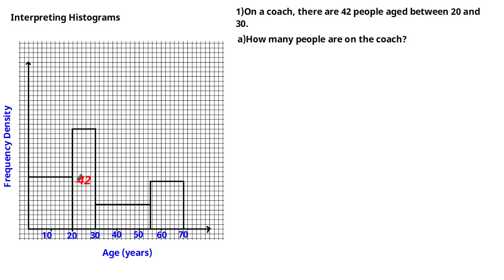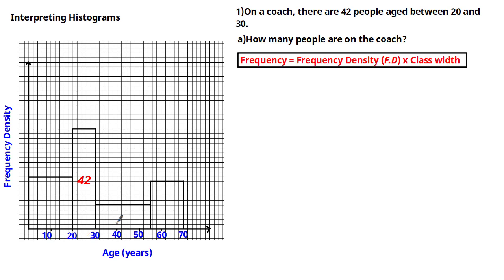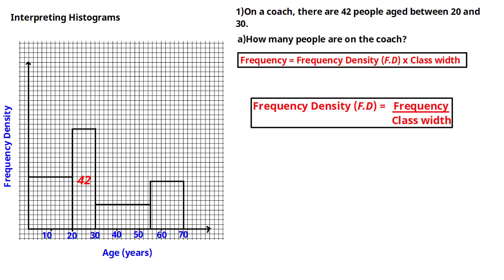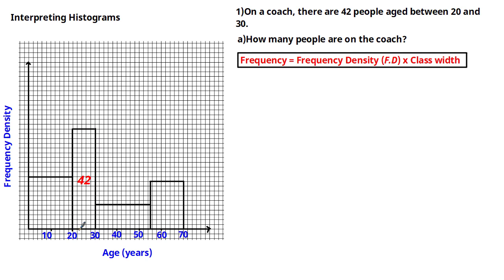Given that this frequency is 42 and the class width of this interval is 10, we can use the formula: frequency = frequency density × class width. Substituting in, 42 = frequency density × 10, so dividing both sides by 10 gives a frequency density of 4.2 for this class interval, which we can label on the graph.